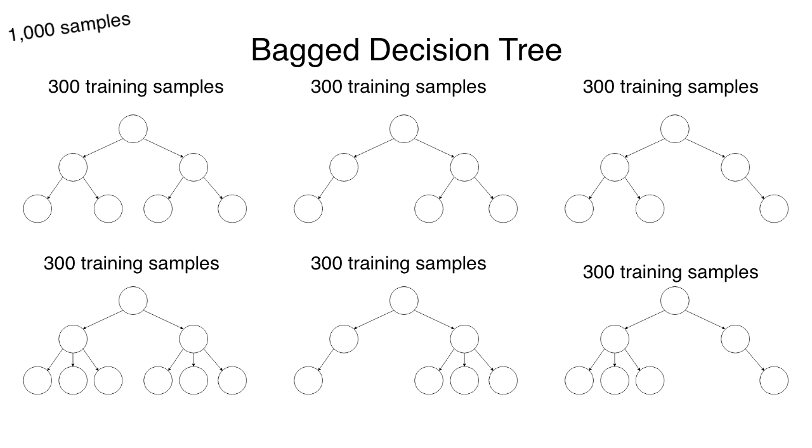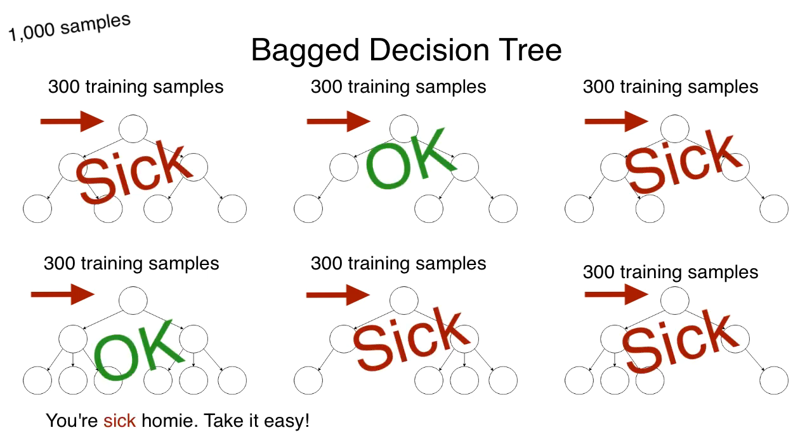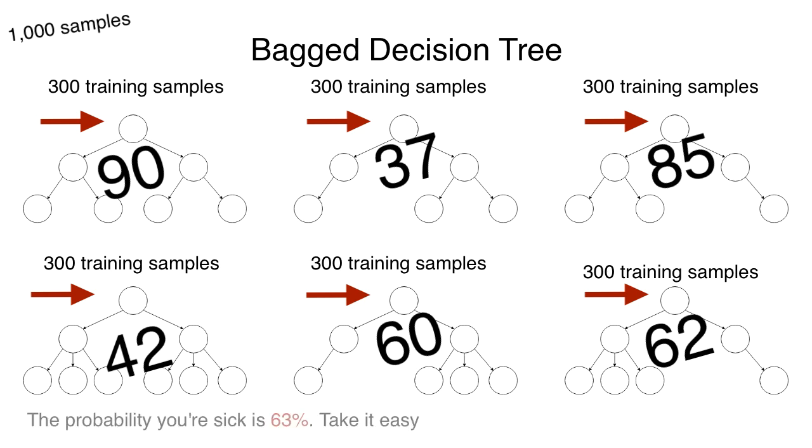When testing a sample, we pass it to all B decision trees and majority rules. Or in the case of regressed values, it just takes the mean of all the decision tree outputs.